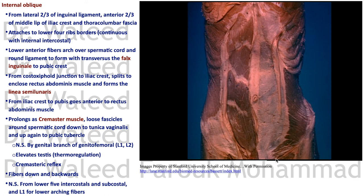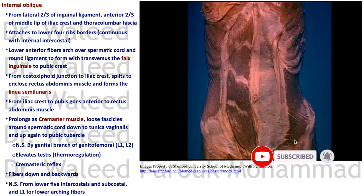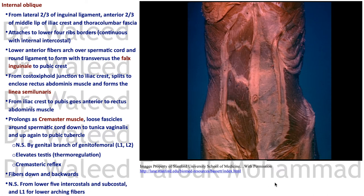As the testis descends from the abdominal cavity outward through the inguinal canal, it takes sleeves from the muscle layers. From the internal oblique it takes the cremaster muscle — thin fascicles of muscle around the spermatic cord that insert back into the pubic tubercle. The cremaster muscle's nerve supply is the genital branch of the genitofemoral nerve, a branch of the lumbar plexus. When it contracts, it pulls the cord upward.